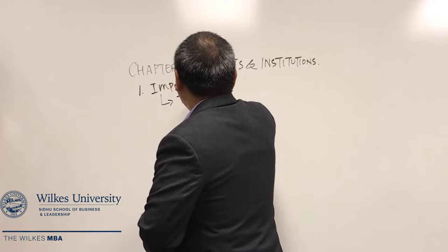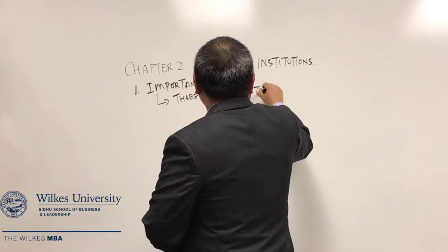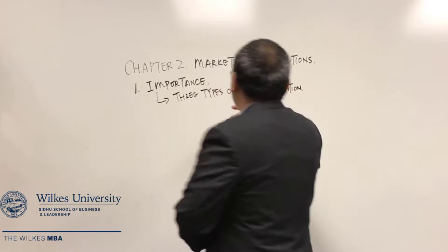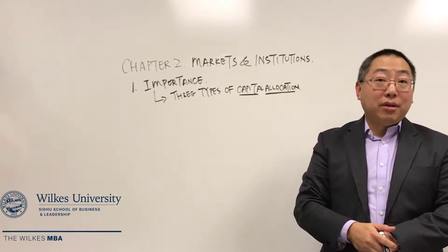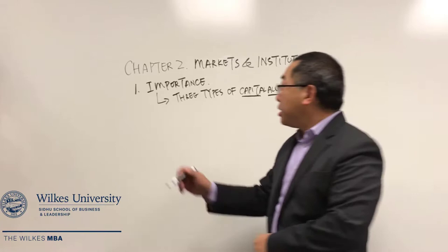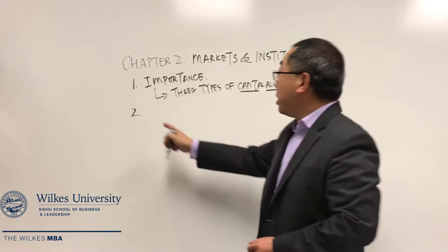In section 1, I want you to be careful about the three types of capital allocation on slide number 7 to slide number 9. Then in the second section, since we talk about market institutions, the second section is about markets and the third section is about institutions.